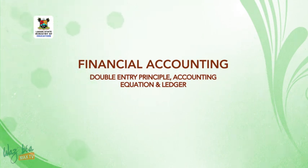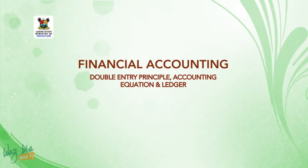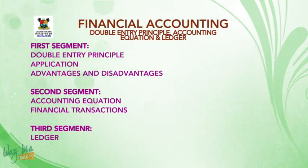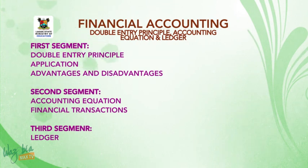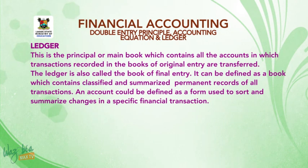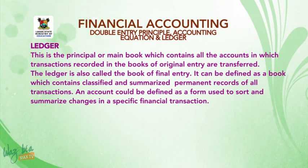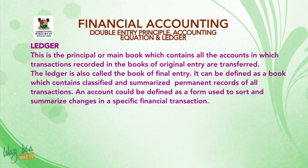My dear students, you are welcome back to the last segment of our series of lectures on double entry principle, accounting equation, and ledgers. In the first segment we looked at the double entry principle, its application, and its advantages and disadvantages. In the second segment we discussed the accounting equation and financial transactions. In this last segment, we are going to look at ledger in depth. The ledger is the principal or main book which contains all the accounts in which transactions recorded in the books of original entry are transferred. The ledger is also called the book of final entry — a book which contains classified and summarized permanent records of all transactions.